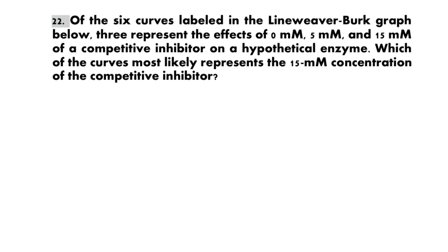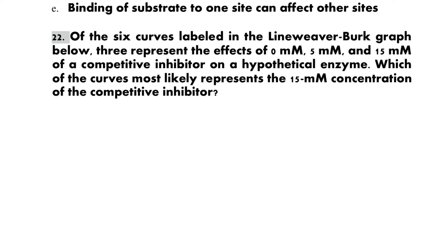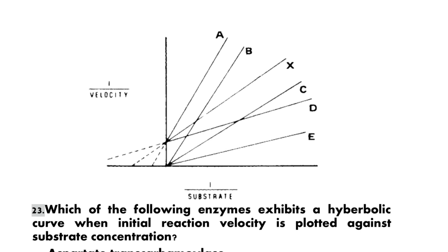Question 22: Of the six curves labeled in the Lineweaver-Burk graph, three represent the effect of 0 mM, 5 mM, and 15 mM of a competitive inhibitor on a hypothetical enzyme. Which curve most likely represents the 15 mM concentration of the competitive inhibitor? The correct option is A, which most likely represents the 15 mM concentration.